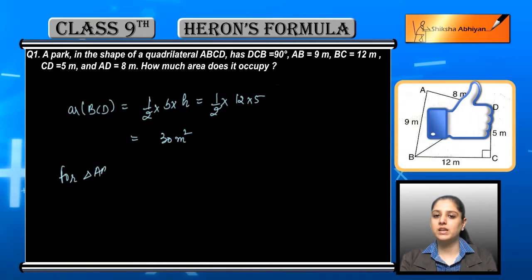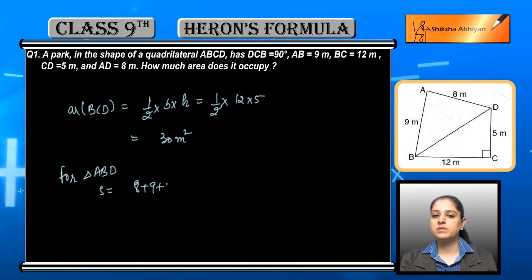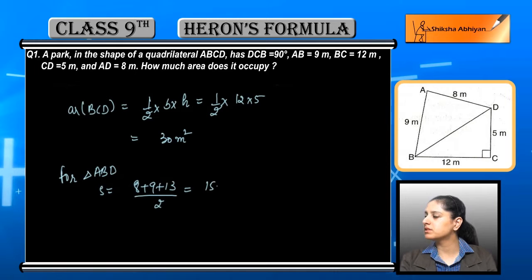Now if we find the area of the next triangle, triangle ABD, it is not a right-angle triangle. So what we will do is find the semi-perimeter. We have (8 + 9 + 13) divided by 2, which equals 15 meters.